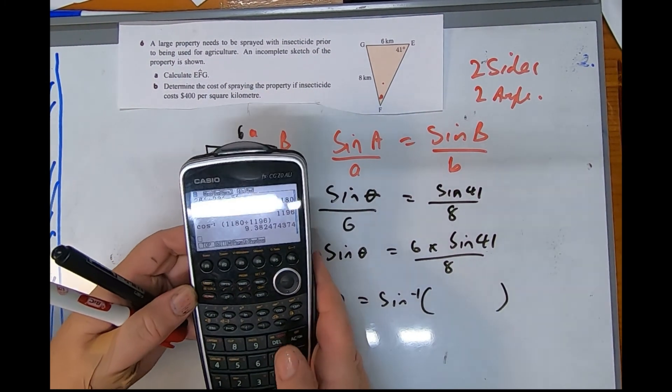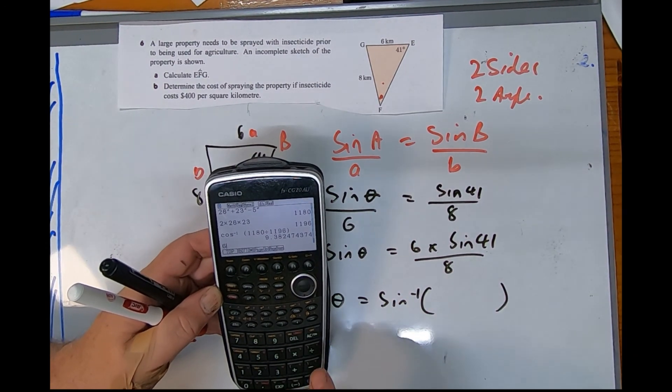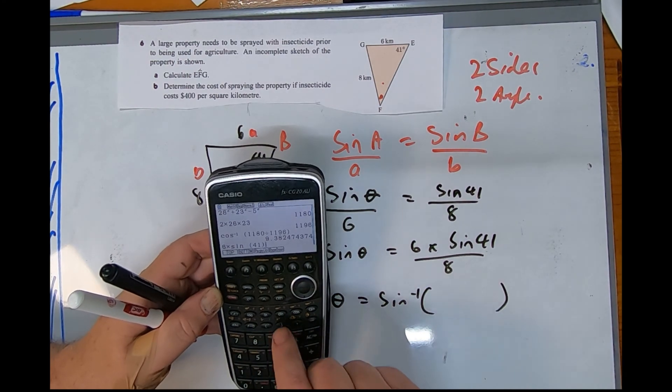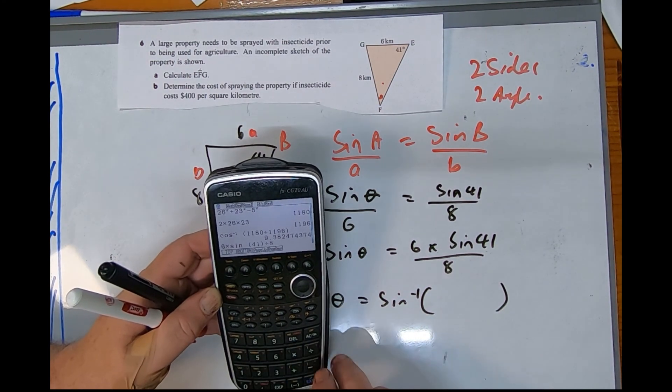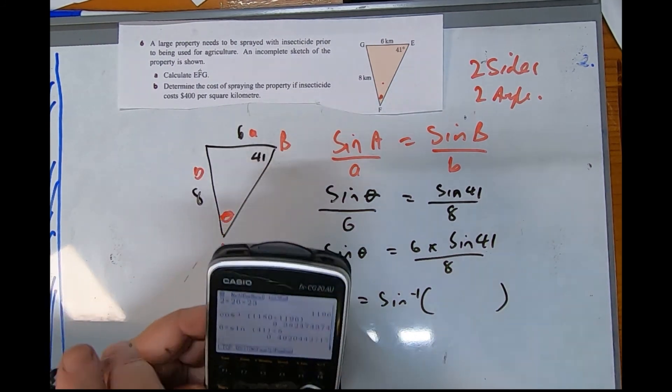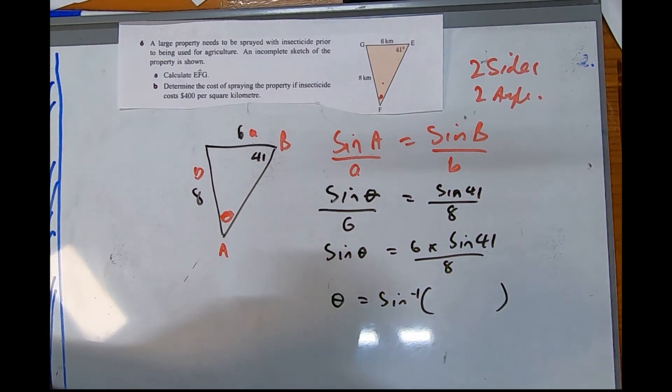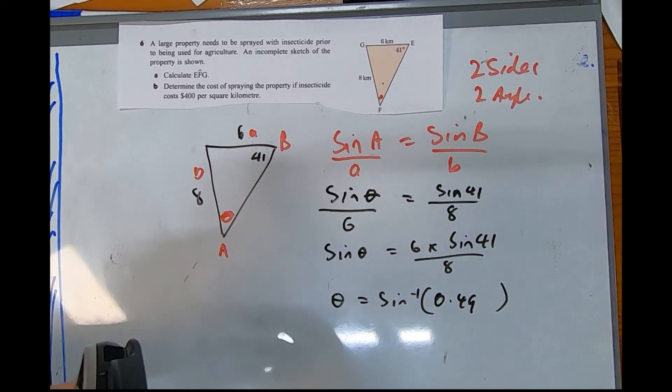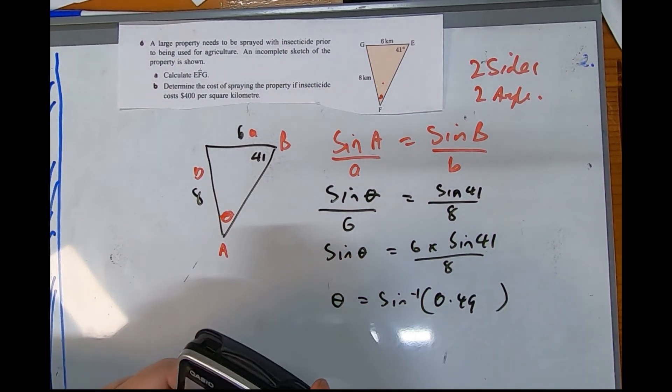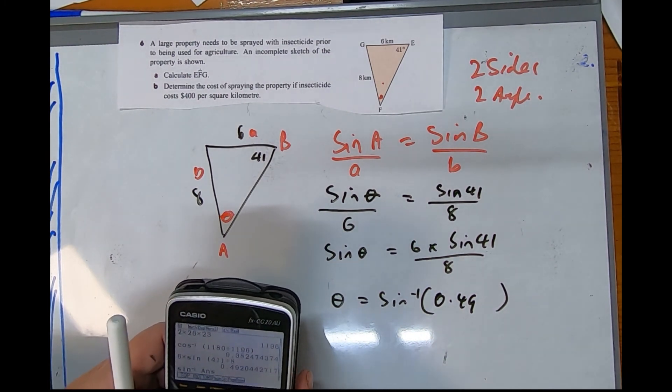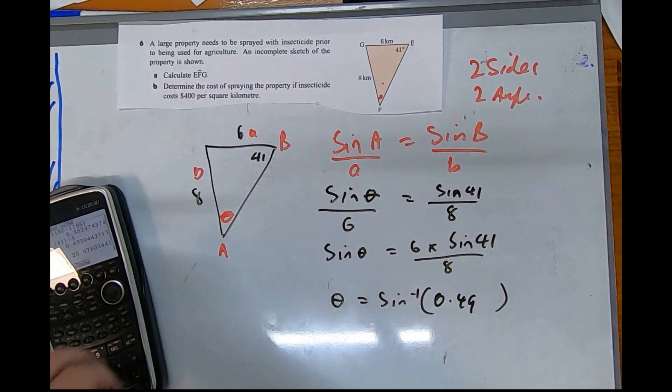It says hopefully it must be less than one, otherwise we've made a mistake. Plop that into the calculator if we can see this. 0.49, that looks good. So 0.49, and we'll do shift sine of that number, shift answer, get 29 degrees.